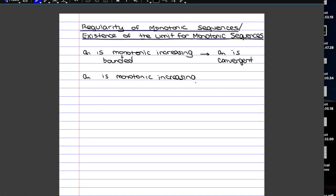And of course you can flip this around for monotonic decreasing. So if it's decreasing and bounded, it would be convergent as well. But if it's monotonic decreasing and unbounded, it would be divergent to minus infinity. For the proof, we don't have to prove every single one of the four cases — we can just prove two of them.